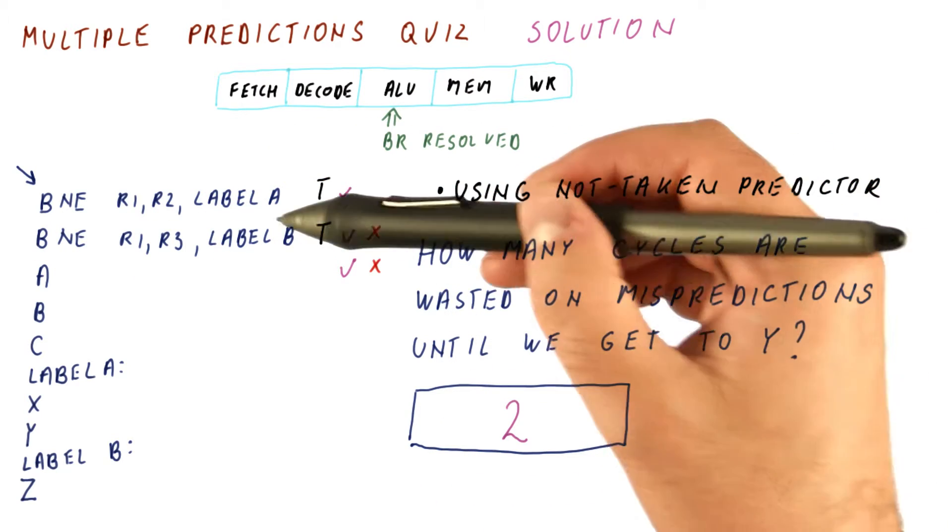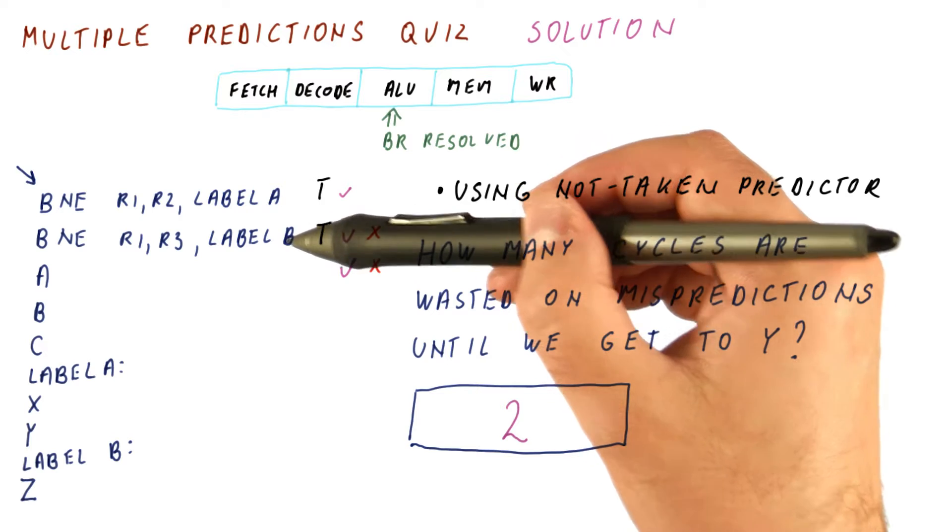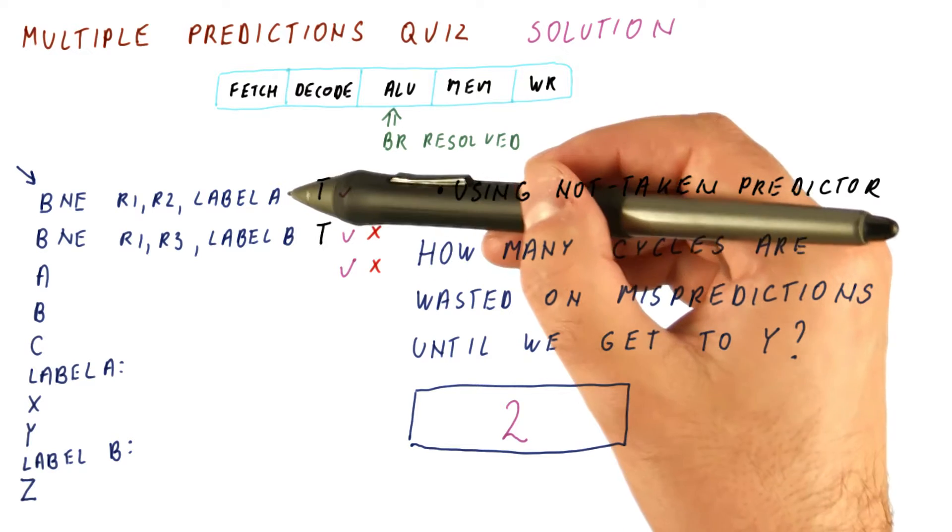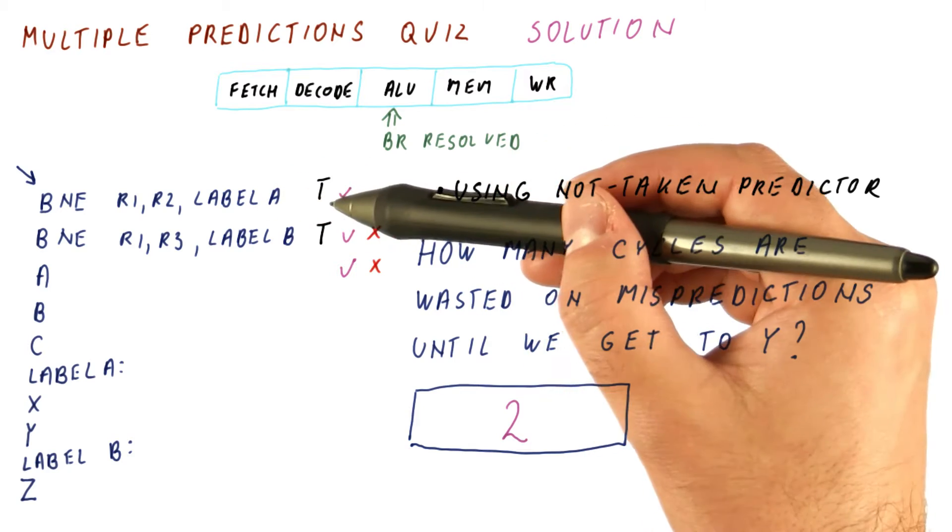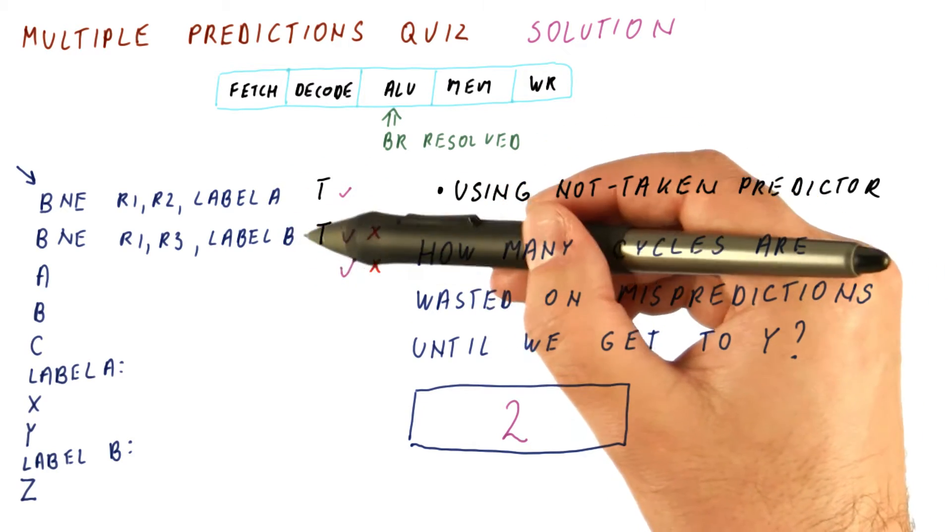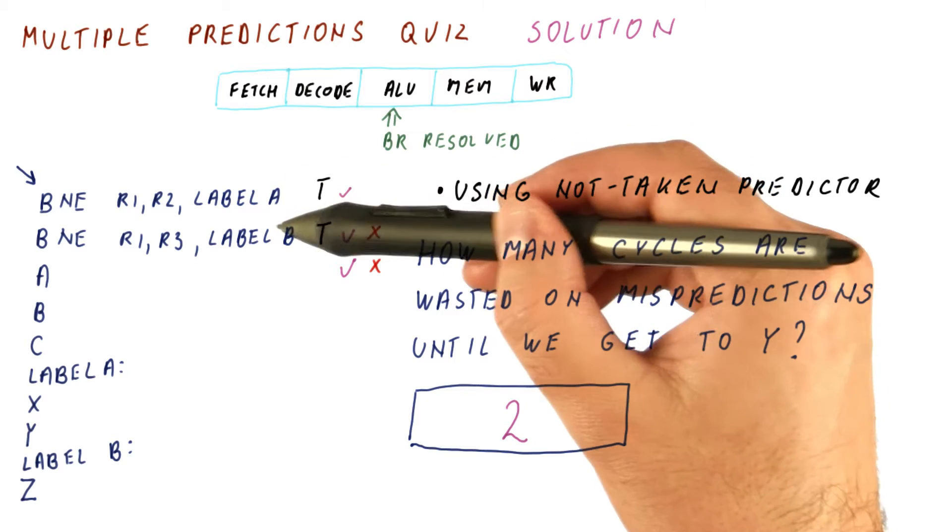So basically, here we actually mispredicted two branches, but the second one was mispredicted in the shadow of the first misprediction. This branch would never have been fetched if we predicted this correctly.